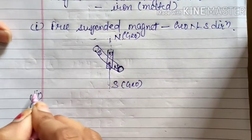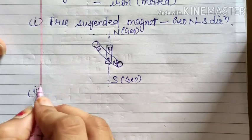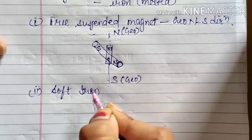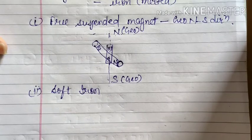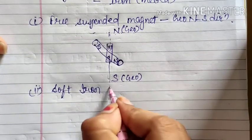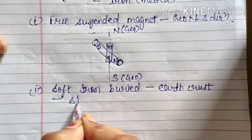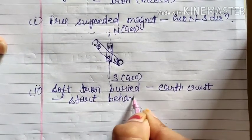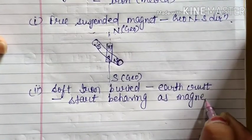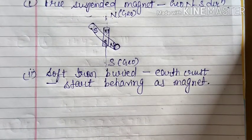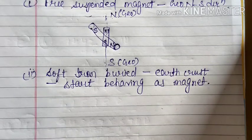The second evidence is given about soft iron. If a soft iron bar or rod is buried under the earth's surface or crust, then it will start behaving as a magnet. This is possible only if there is already a magnet present, because of which the soft iron bar is getting induced magnetism, and because of that the iron starts behaving as a magnet. So this is the second proof that inside the earth some magnetism is present, or the earth behaves as a magnet.